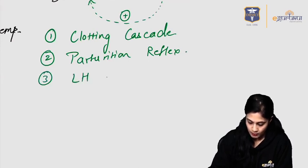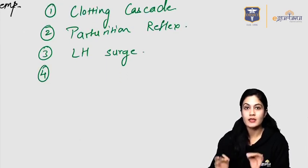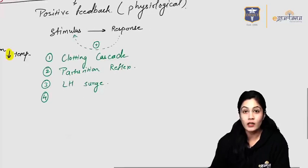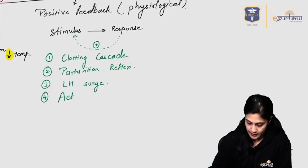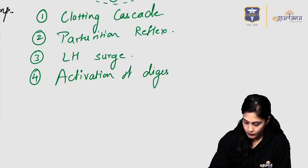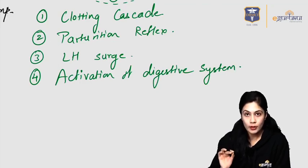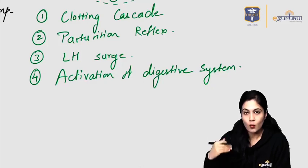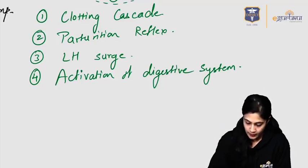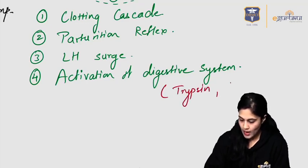The second example is the parturition reflex. The third is the LH surge in the menstrual cycle, which we will discuss in the reproductive system. The fourth is the activation of the digestive system — specifically, trypsin activates pepsinogen, converting it into pepsin, which further activates other enzymes. Just remember the names trypsin and pepsinogen for now; we will discuss this in detail in the GI system.